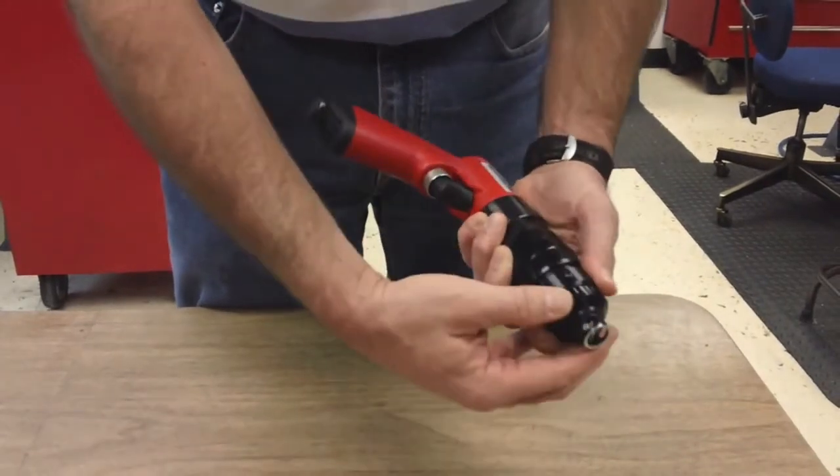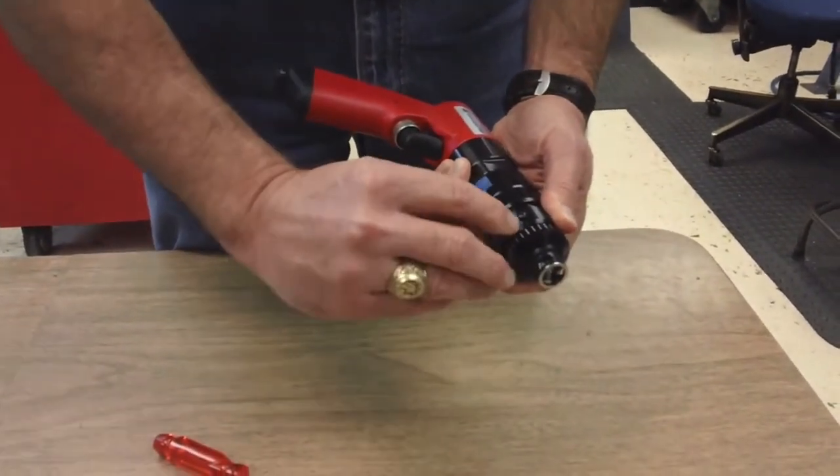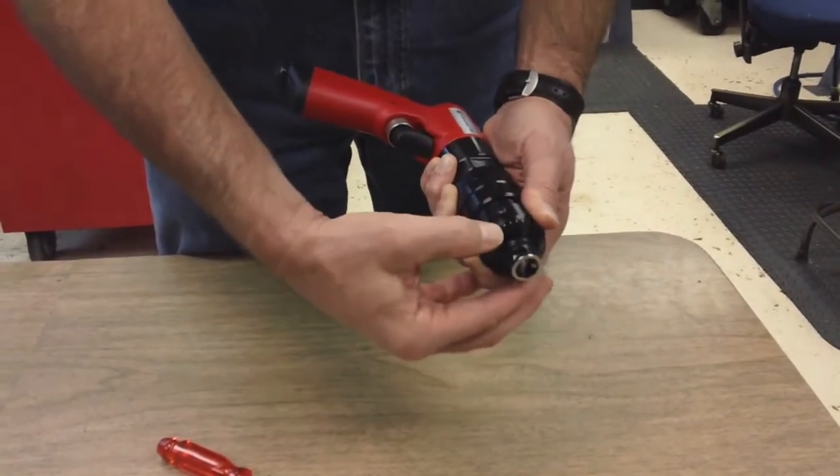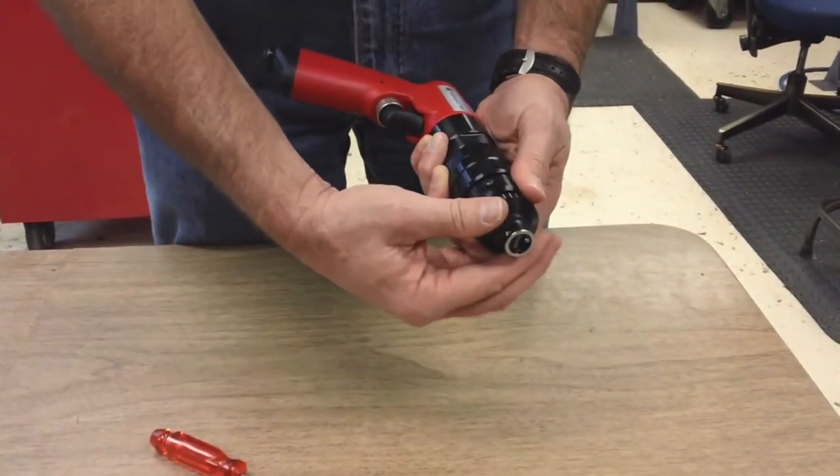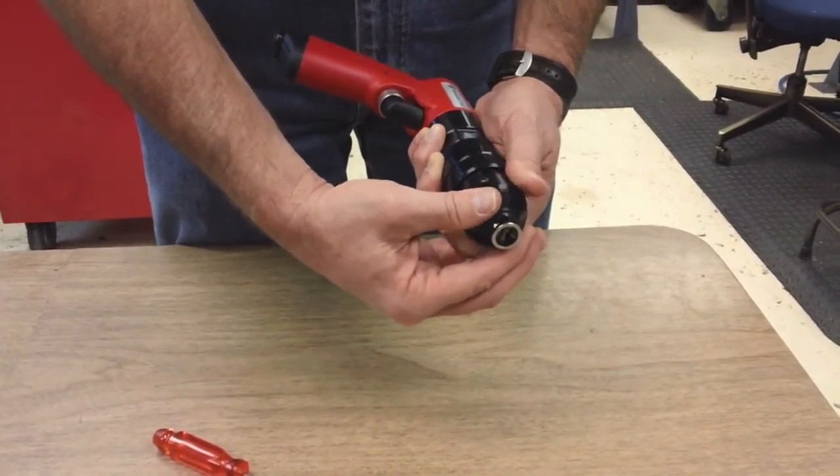This also has a 5 10 thousandths adjustability, so if you put that set mark between the white graduations, that's 5 10 thousandths adjustability. Each graduation is a thousandths of an inch.